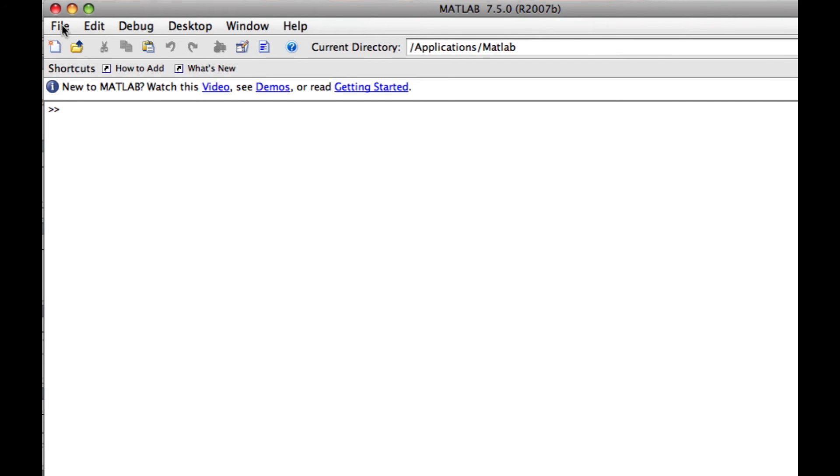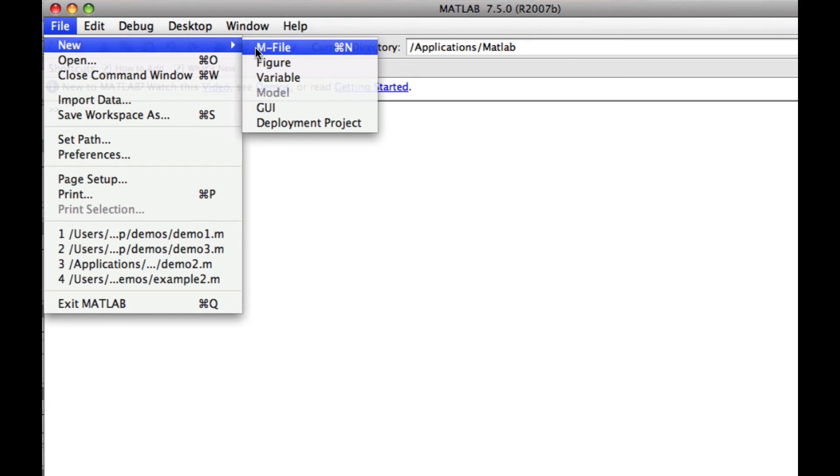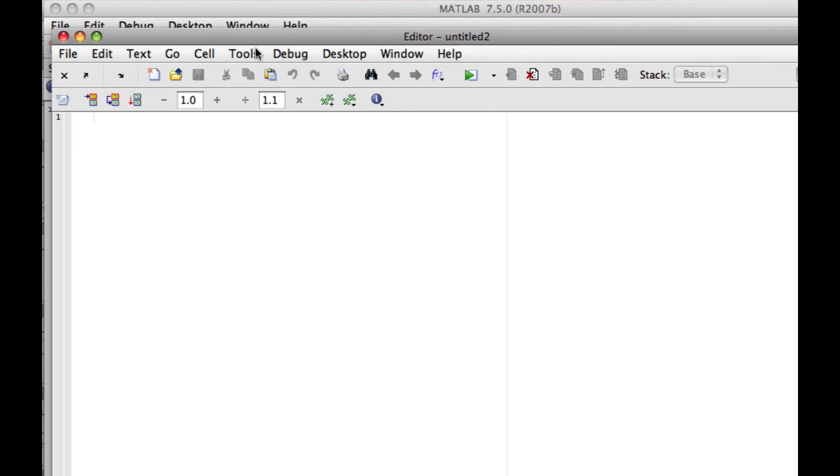Then I will create a new m-file. And in this case, we need to define a function. A function is something where you insert one value and get another value out of it. And the function in this case is f, because that is what we need to calculate. And I will call this m-file demo2, and it will have an input, and that is the x.